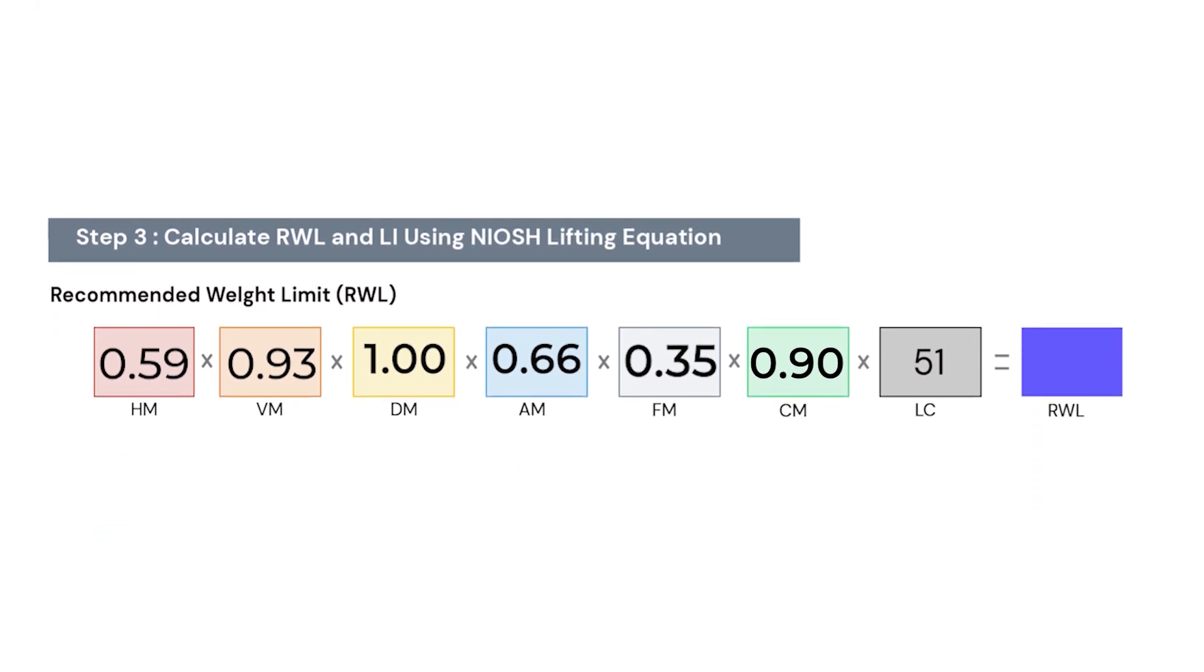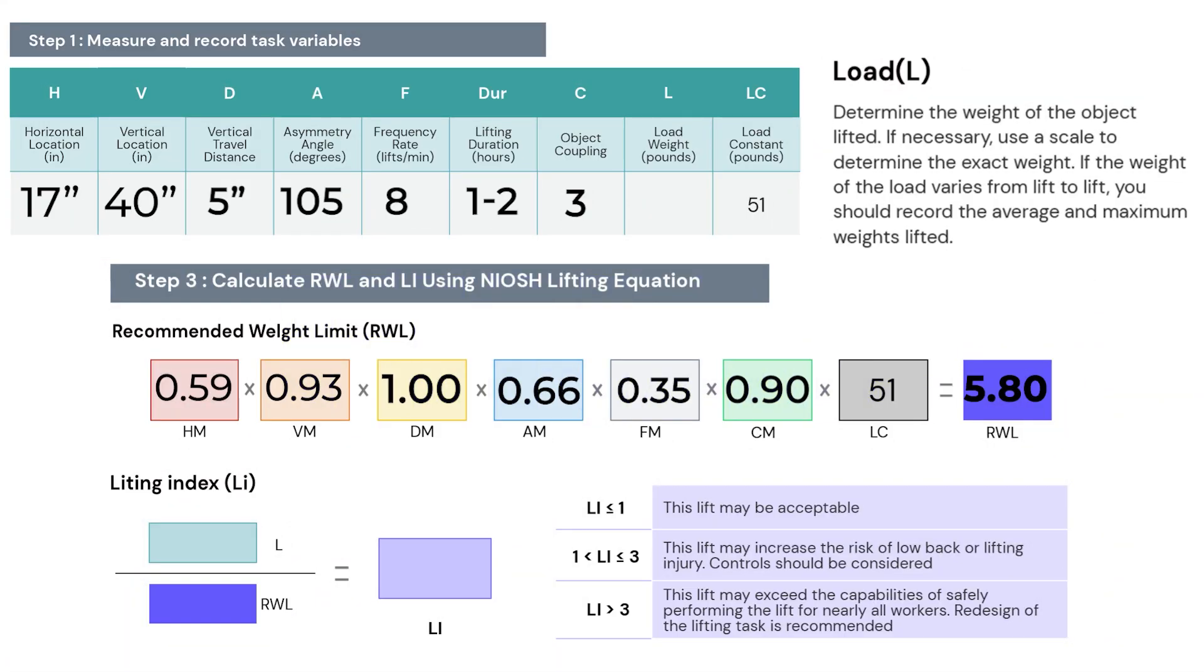Once all of our task variables have been converted, we run our calculation to arrive at our recommended weight limit. For our example, that recommendation is 5.8 pounds. Our final task variable is to add our actual load of our actual boxes in our example, which in this case is 22 pounds, to arrive at our lifting index.